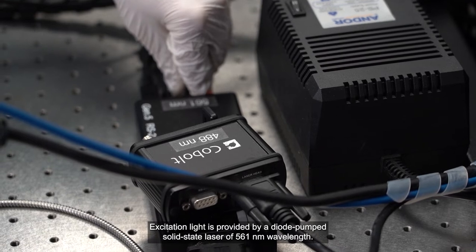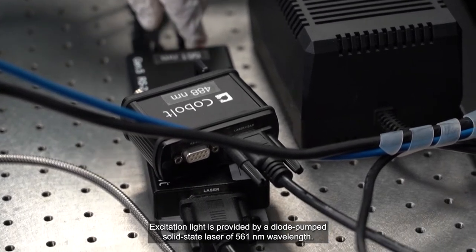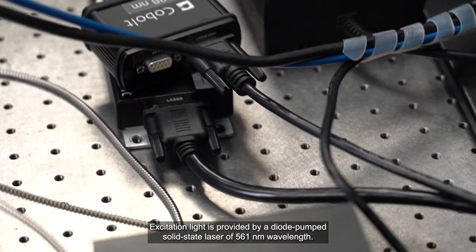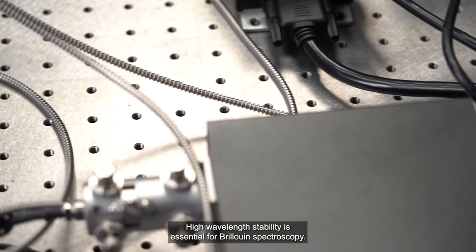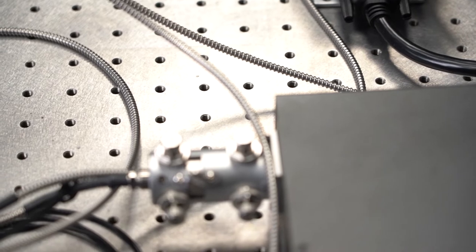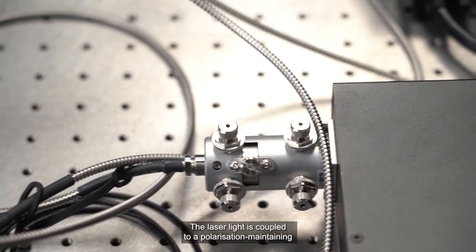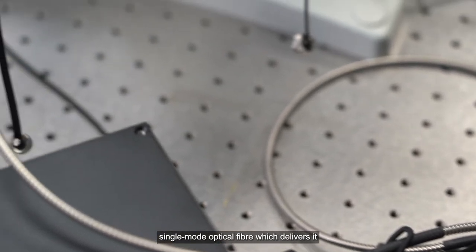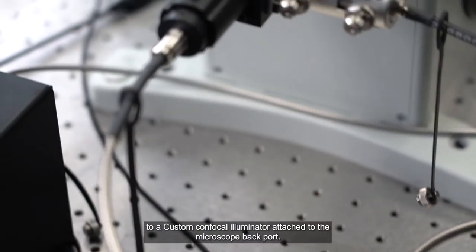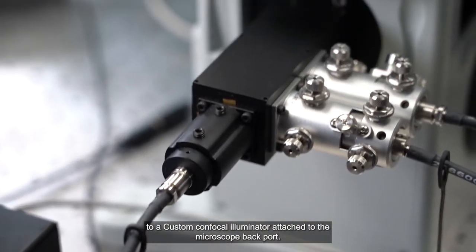Excitation light is provided by a diode-pumped solid-state laser of 561 nanometer wavelength. High wavelength stability is essential for Brillouin spectroscopy. The laser light is coupled to a polarization-maintaining single-mode fiber which delivers it to a custom confocal illuminator attached to the microscope back port.